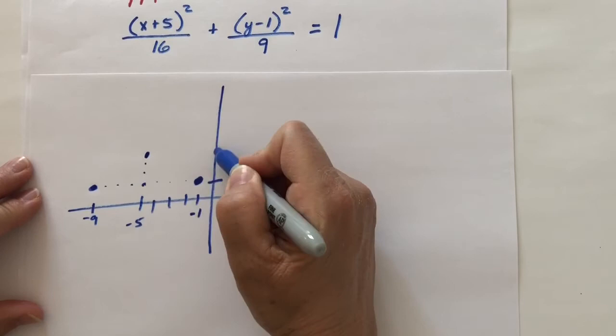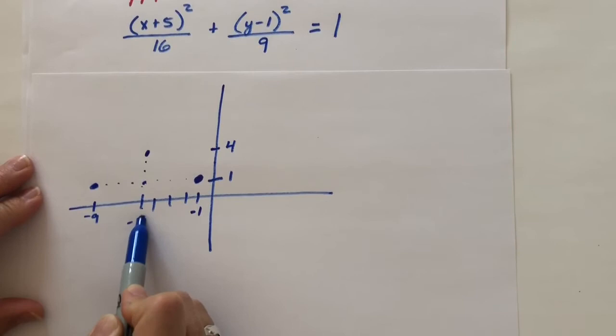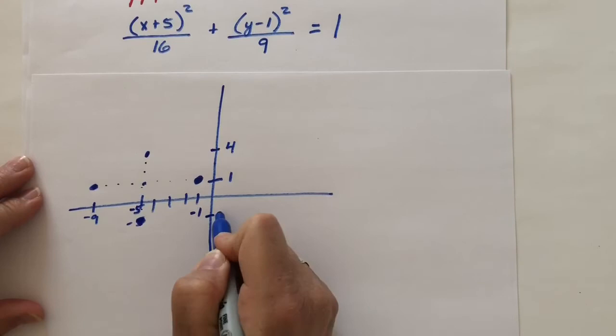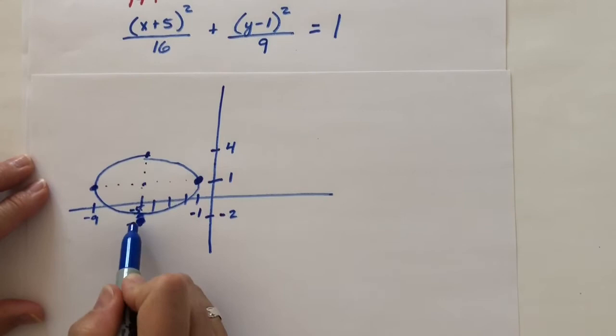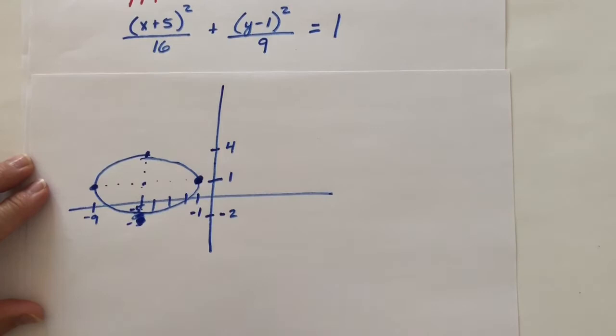And down 3. 1, 2, 3. Oops. I'm squishing all over that number that's negative 5. And I'm down at a negative 2. And I do my best to draw an ellipse through those points. I missed it by a fair amount right here. It might have been nice to do this on graph paper. But here's a rough sketch of my ellipse.